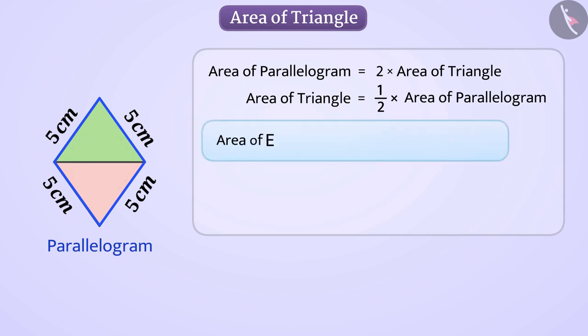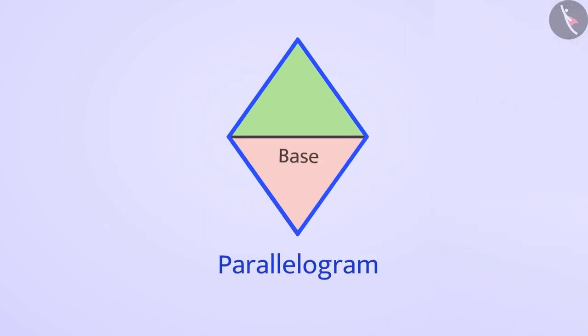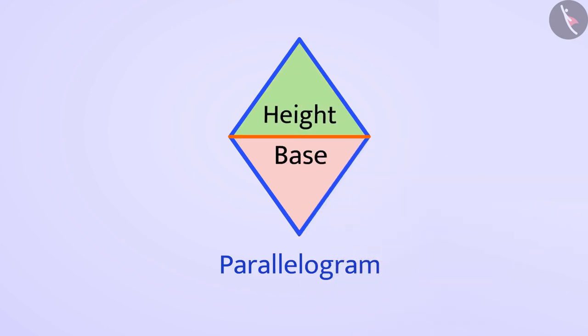In this way, the area of each triangle is half multiplied by base multiplied by height, in which base is one side of the triangle and height is the length of perpendicular dropped on that side from the opposite vertex.